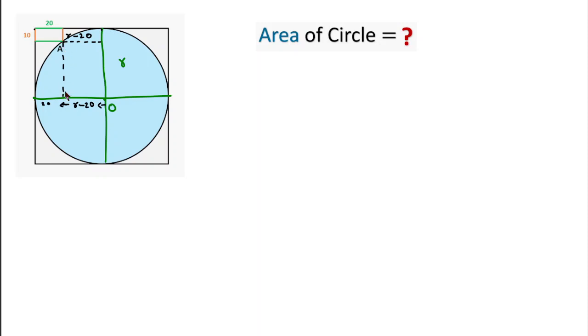In the same way, this length, from this to this, is also a radius. This length is 10, so this length will be R minus 10.